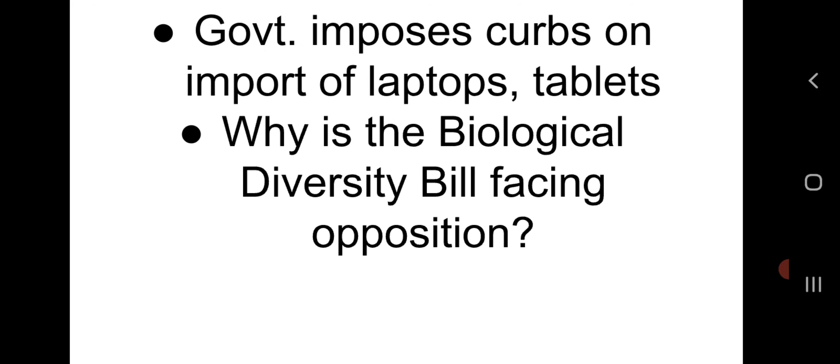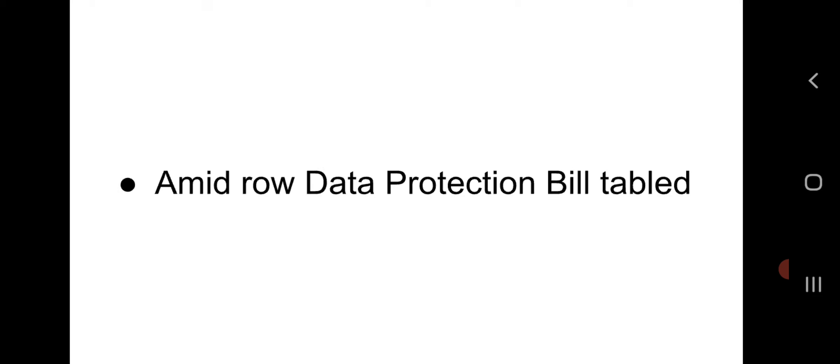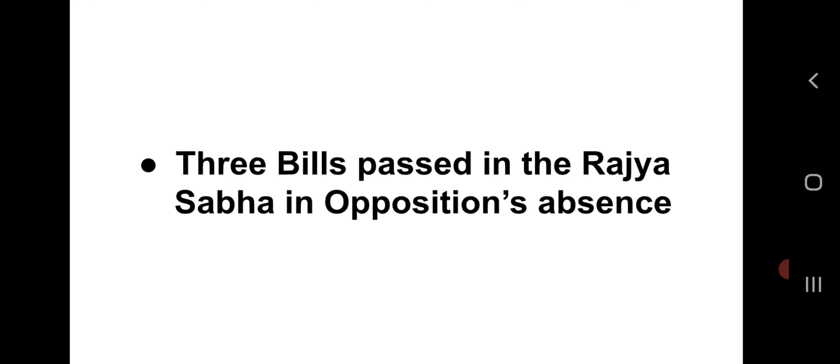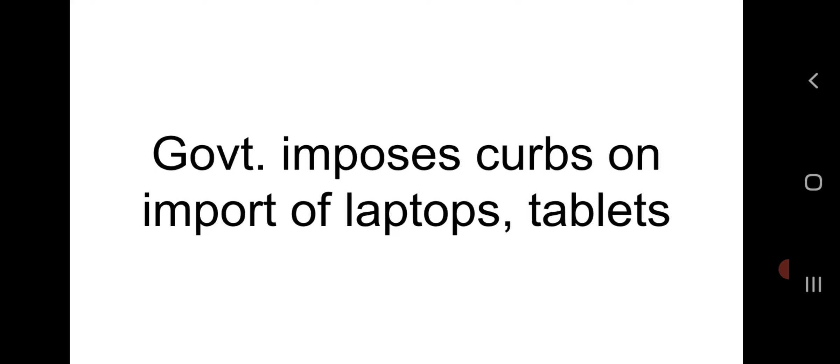Good evening friends, welcome to my channel. Let's start from the main topics. First topic is government imposes curbs on import of laptops and tablets. Second topic is why is the Biological Diversity Bill facing opposition. Third is a metro data protection bill tabled. Both Himalayan vulture bred in captivity for the first time in India, and over 9 lakh trees likely to be axed for Great Nicobar project — bills passed in Rajya Sabha in opposition's absence.